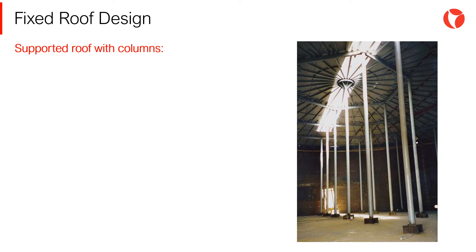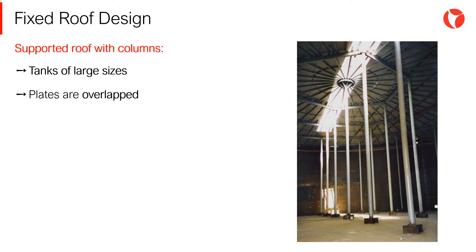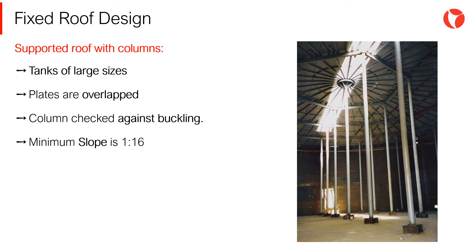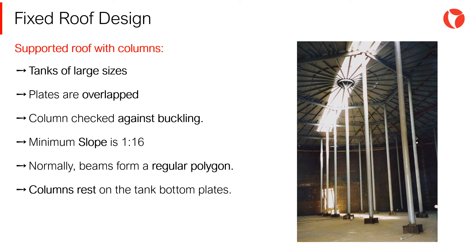The main characteristics of supported roofs with columns are: they are used for tanks of large sizes; the roof plates are overlapped and not welded to the structure; the columns should be checked against buckling according to section 5.10.3.4; the minimum slope of the roof will be 1:16; normally beams form a regular polygon or circles; and columns rest on the tank bottom plates.